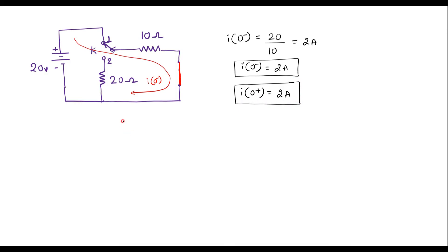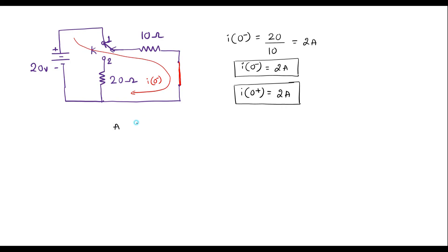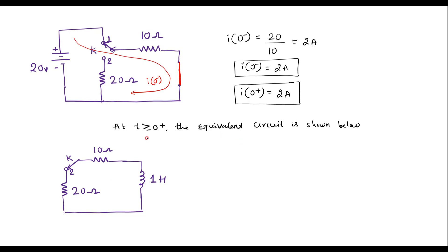Now let me consider the circuit. At t equal to 0, the switch moves from position 1 to position 2. At t greater than or equal to 0 plus, the equivalent circuit is shown below. Let me assume the current in the circuit is I of t. Now let me apply KVL to this loop.